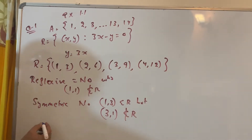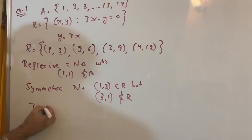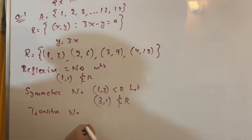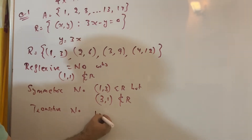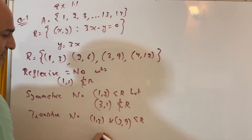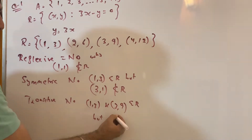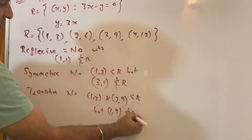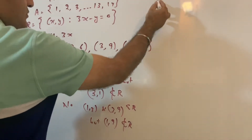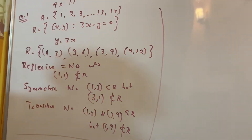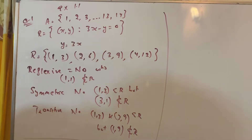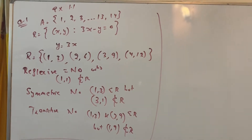Then check transitive — again the answer is no. Why? Because (1,3) and (3,9) both belong to R, but (1,9) does not belong to R. So it is neither symmetric, nor reflexive, nor transitive — that will be the answer.